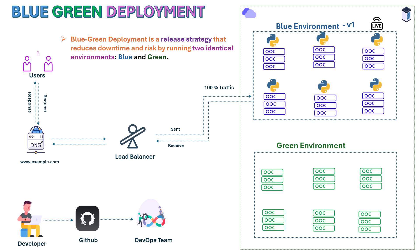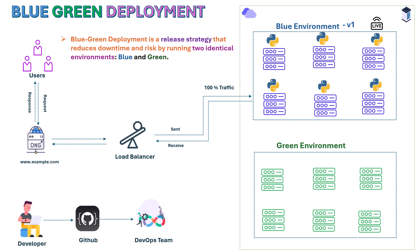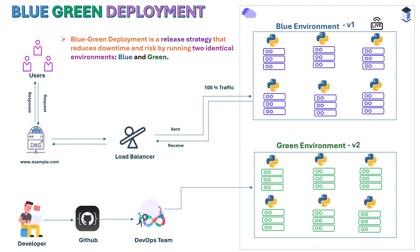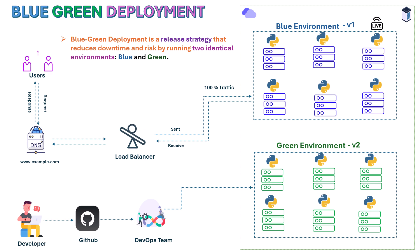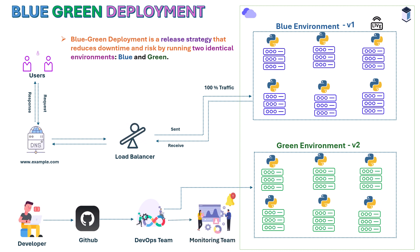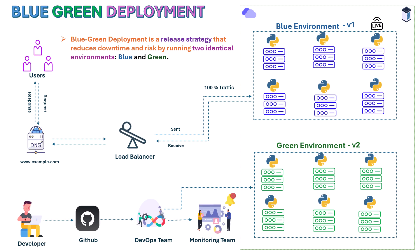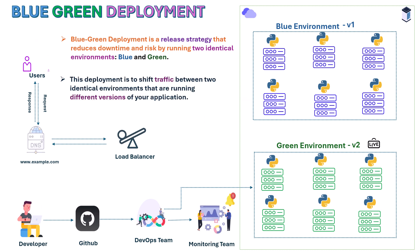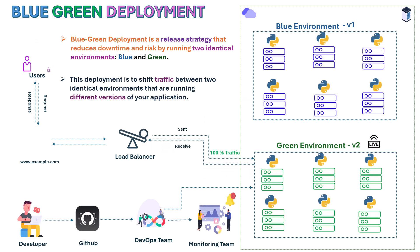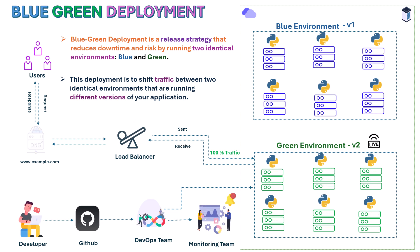A developer finishes version 2 of the code and pushes it to GitHub, then the DevOps team is notified and they prepare the green environment by setting up servers and deploying version 2. The DevOps team alerts the monitoring team, who closely monitors the green environment. Once everything is ready in the green environment, the traffic is gradually shifted from blue to green.